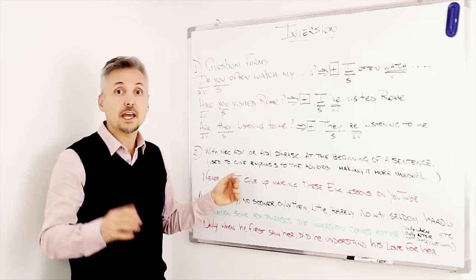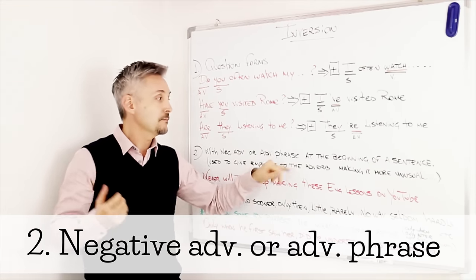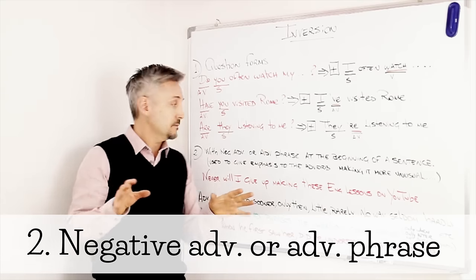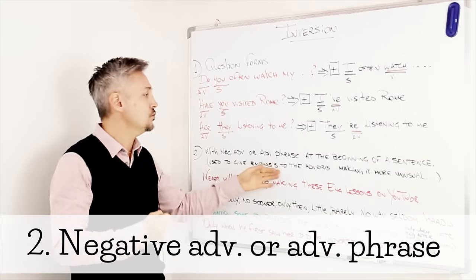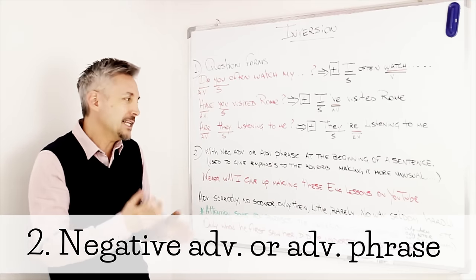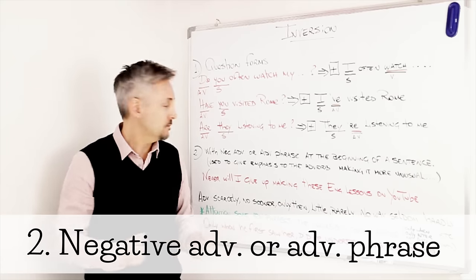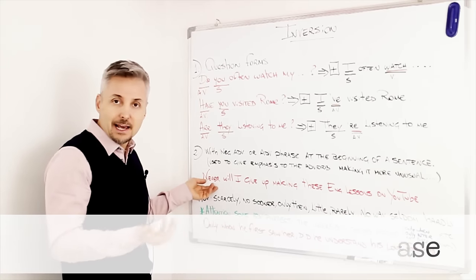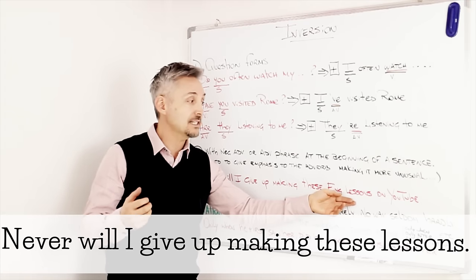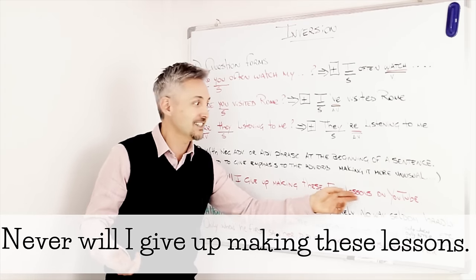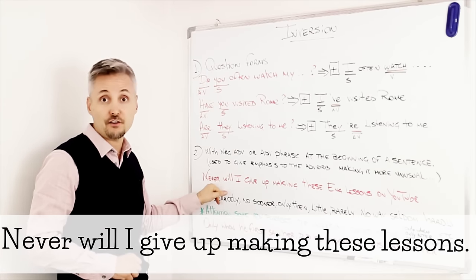The second type is with negative adverbs or adverb phrases, at the beginning of a sentence. Used to give emphasis to the adverb, making it sound more unusual and thus more formal. Like in my example, never will I give up making these lessons or these English lessons on YouTube. You can see, right here, we have a negative adverb, never.